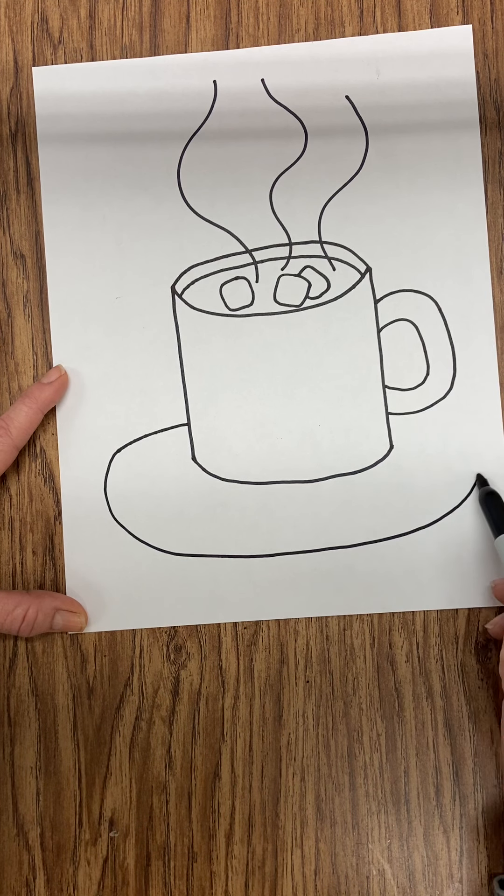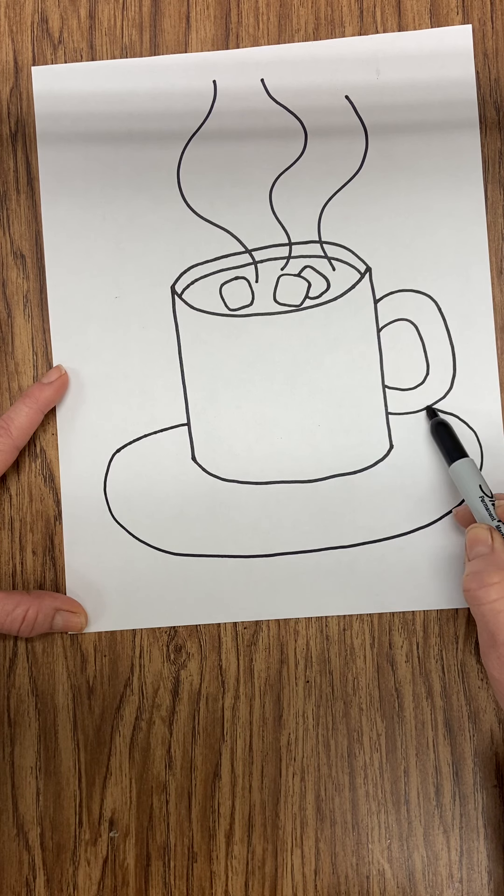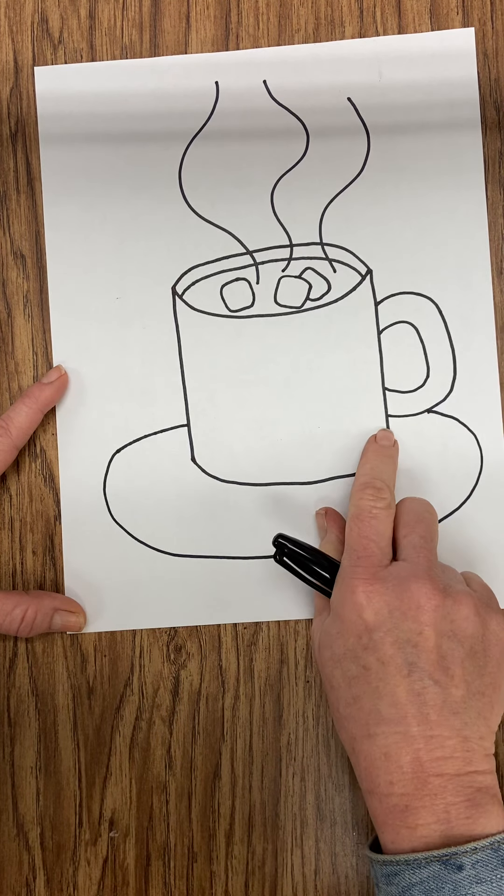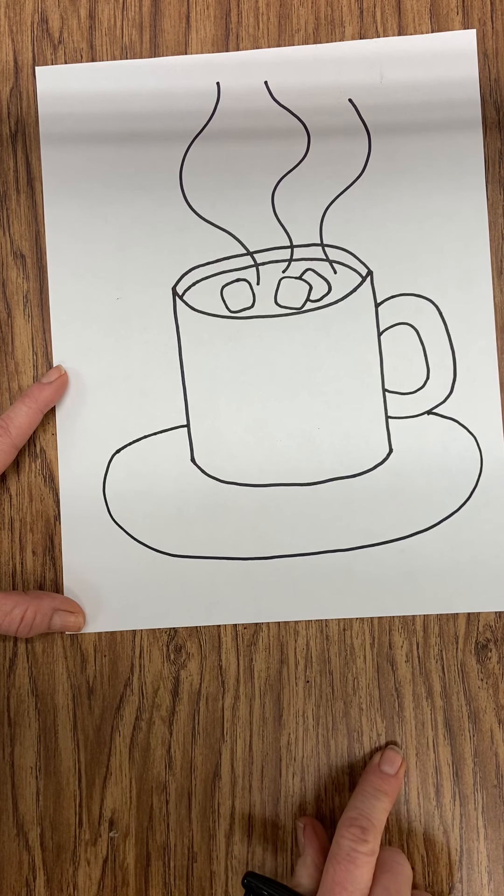Go past your mug and come back up and touch. Wherever that touches is where you want to stop. It might touch on your mug or it might touch on your handle like mine.